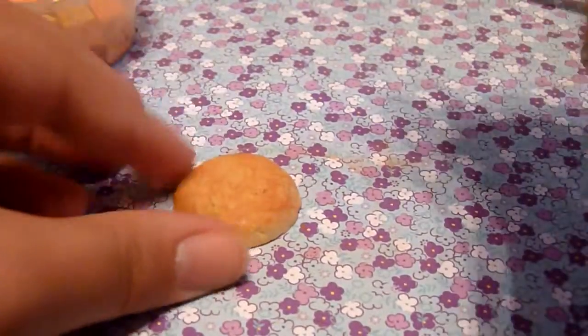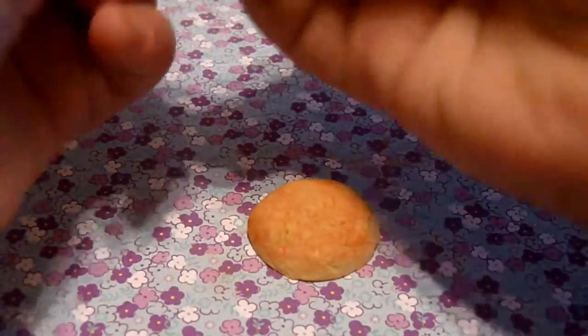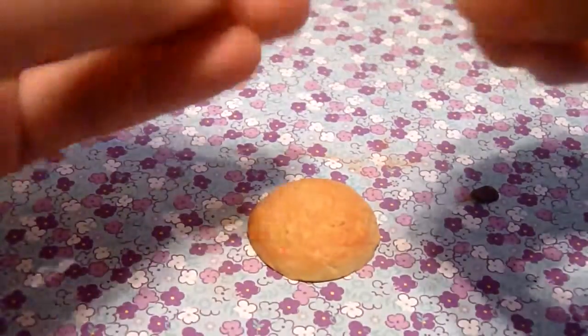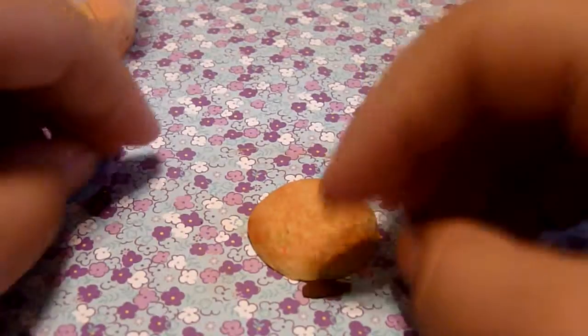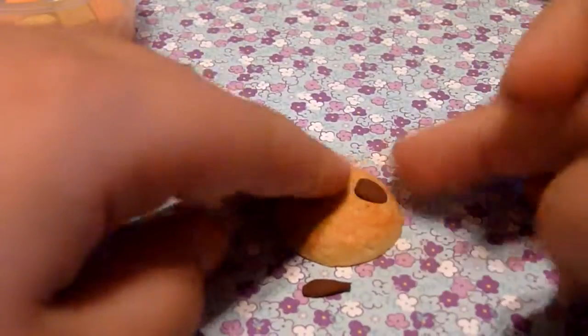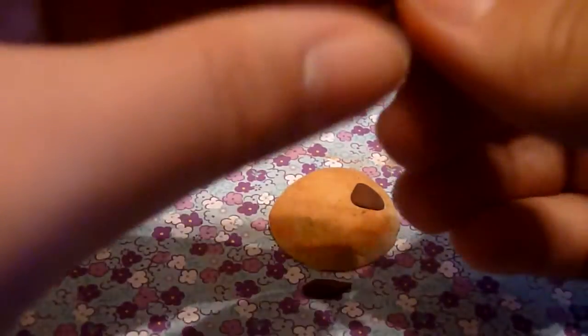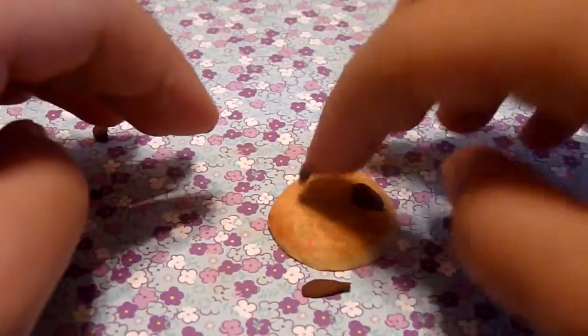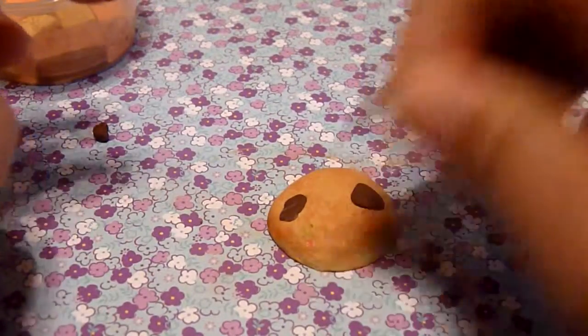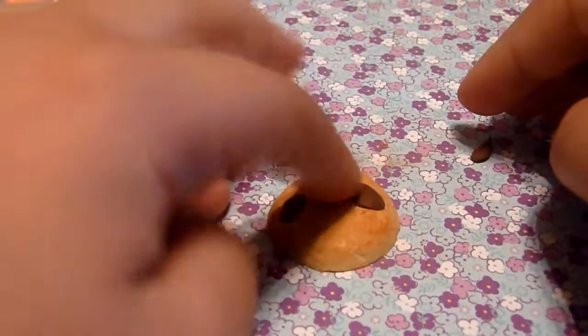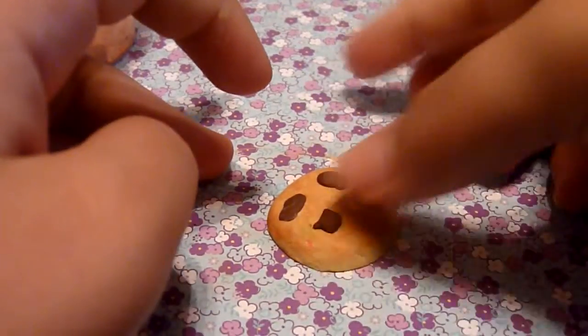So then when you have that, you're just going to take just little random pieces of brown clay and just take them off. They don't have to be in perfect circles. In fact, they shouldn't be so it looks realistic. And then you just stick them in there wherever you want. You can put as many or as little as you want.